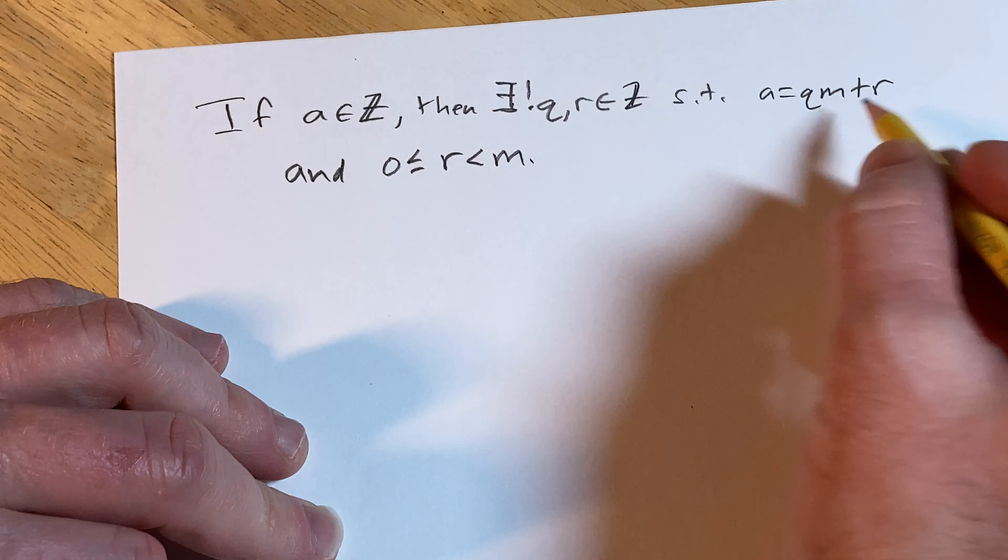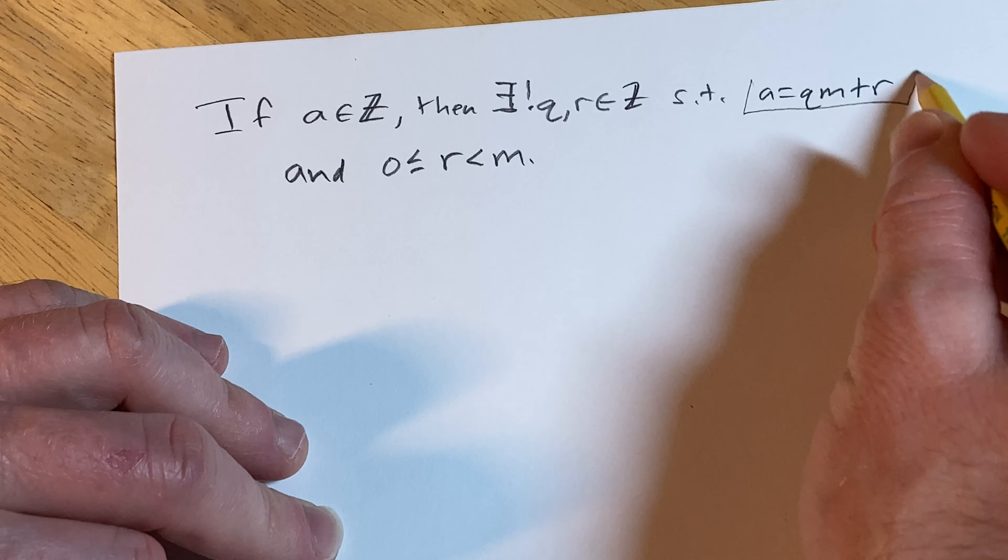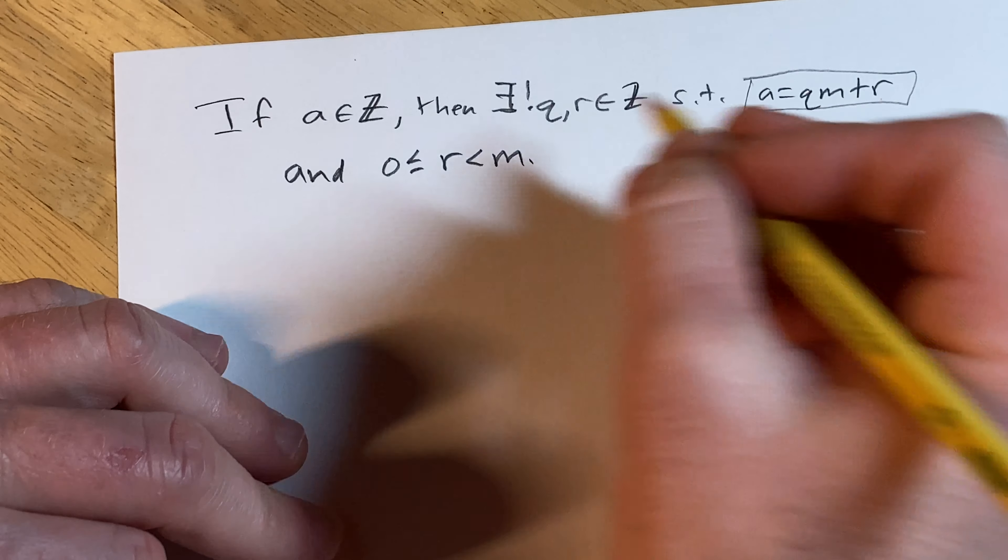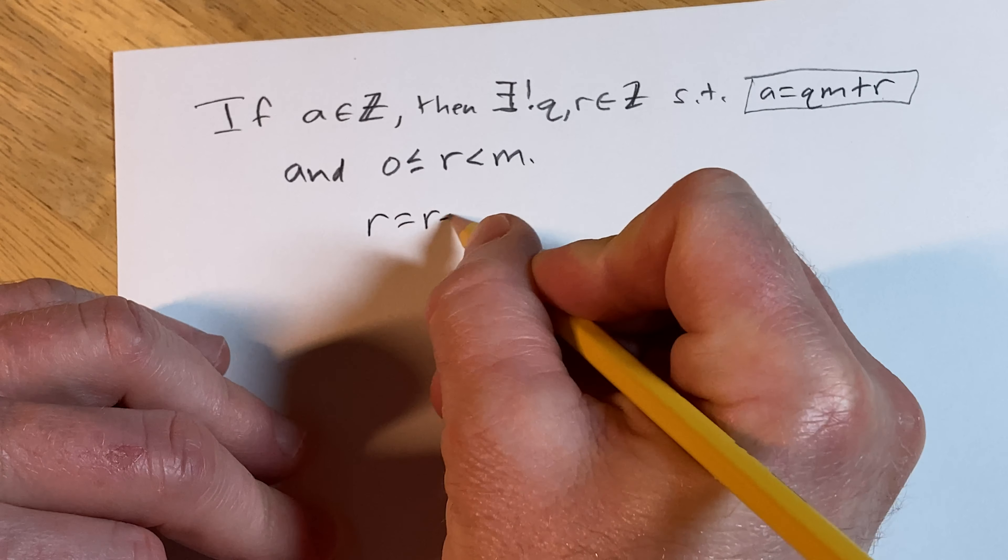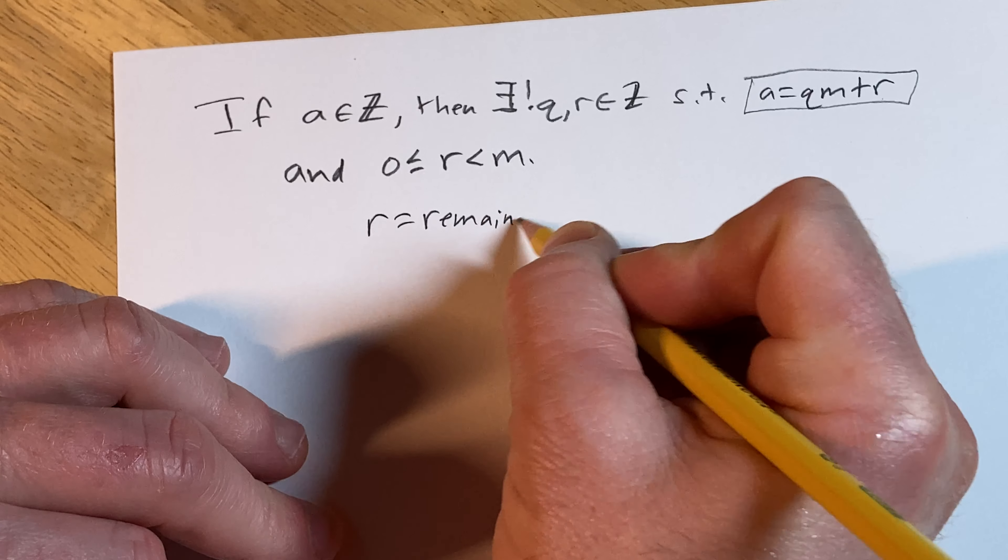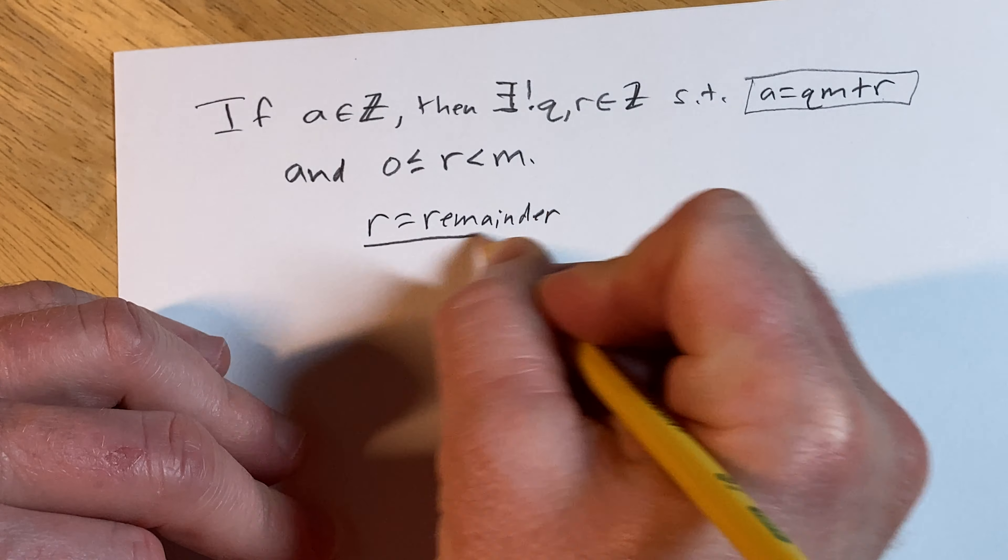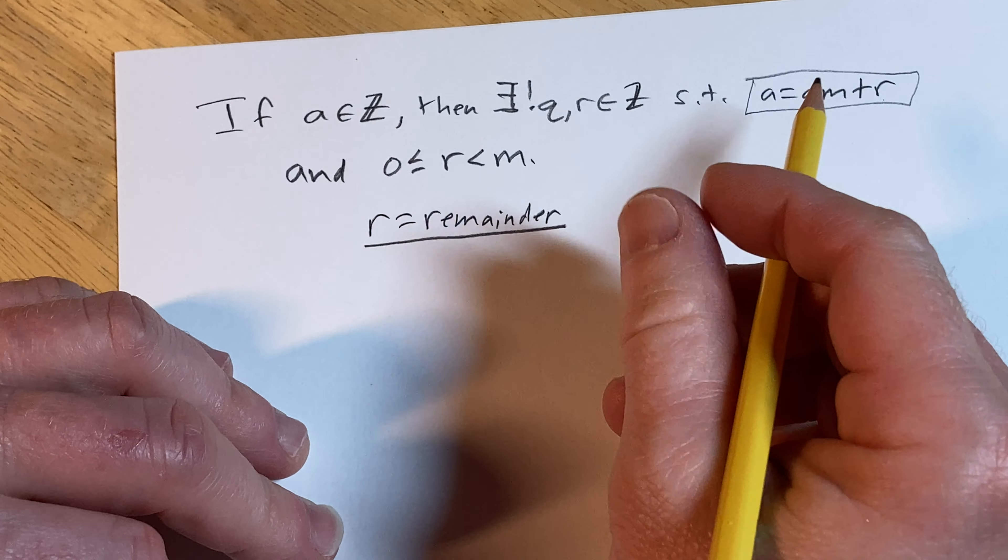So if you think about this equation here, R, this is the remainder. So R is the remainder in all of this.